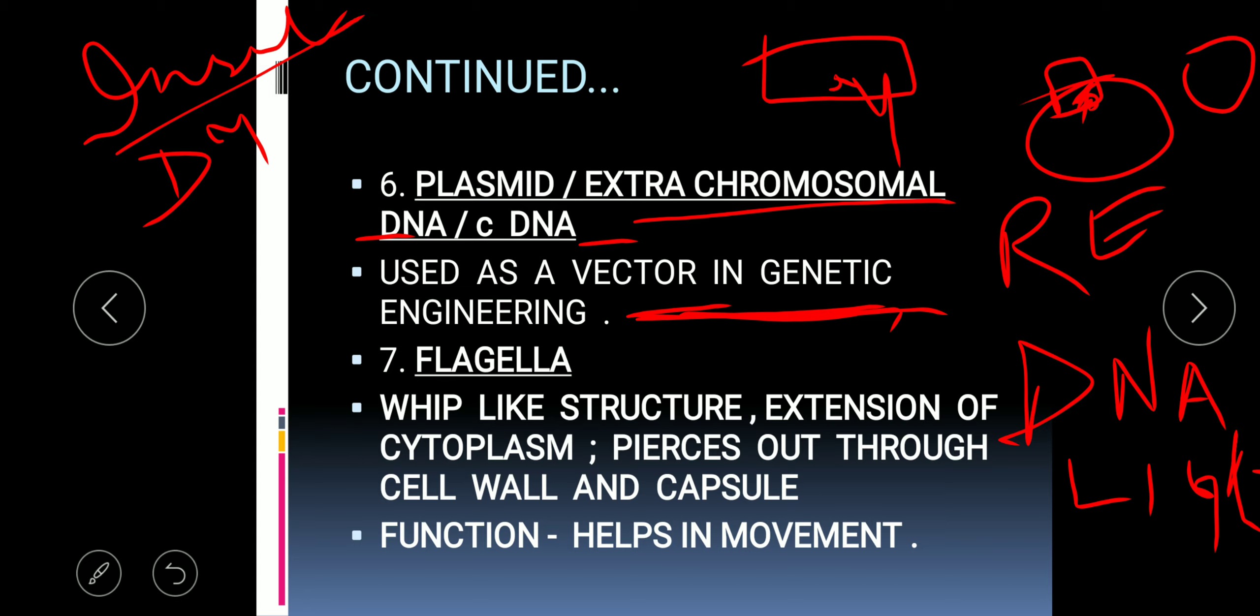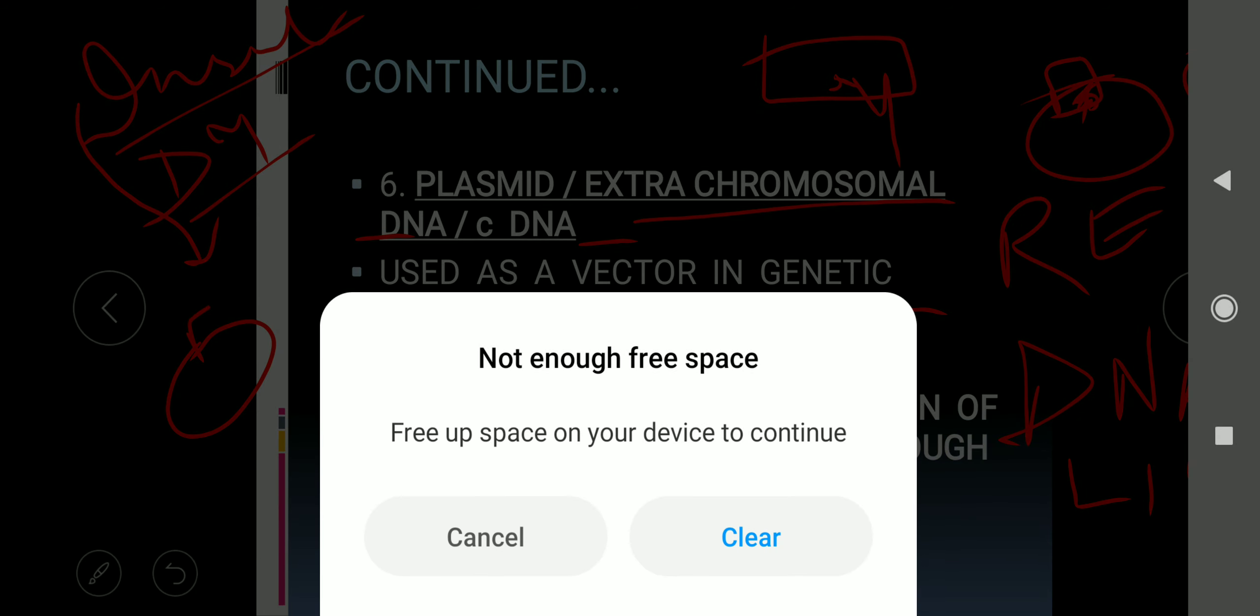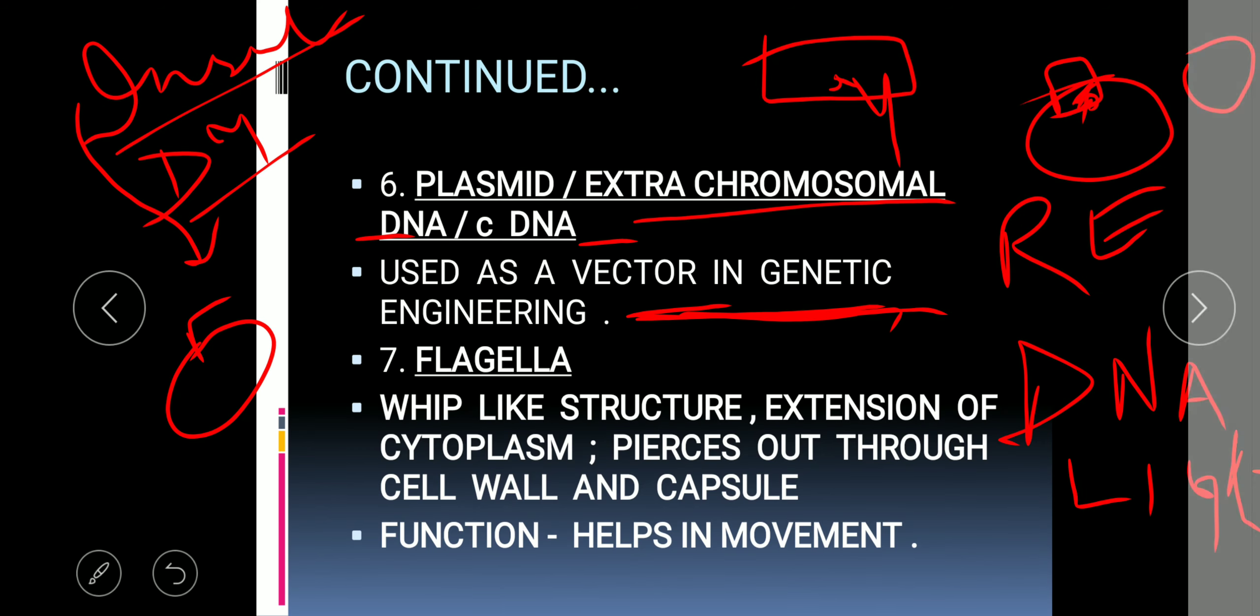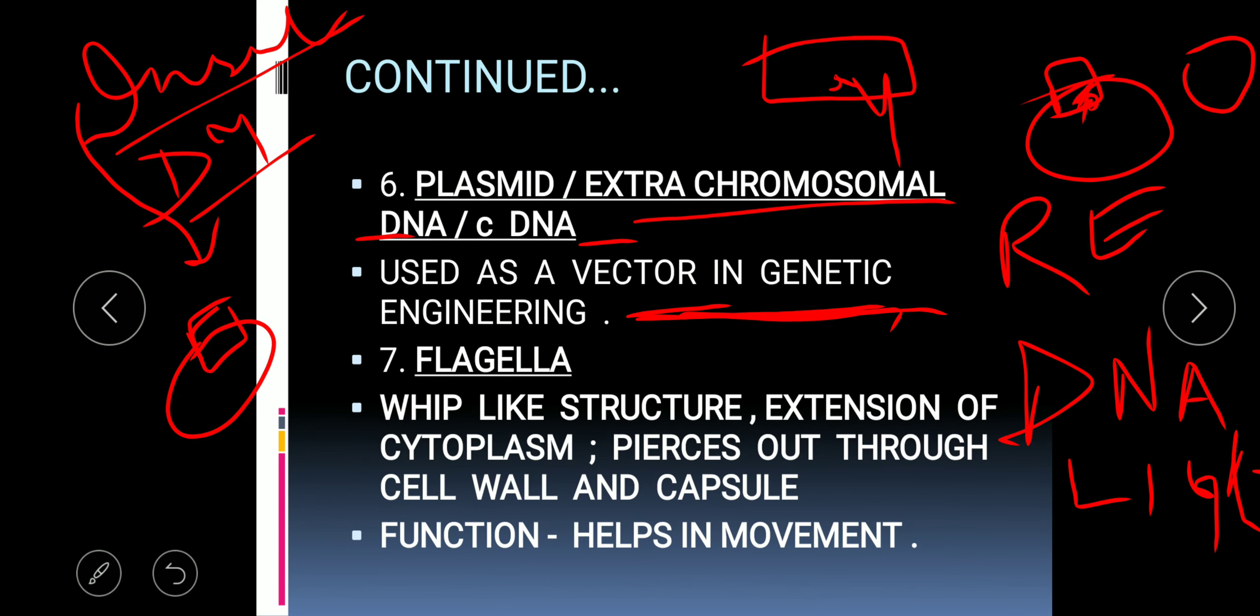If a human doesn't have diabetes, genes from that individual are taken and a bacterial cell is chosen. In that bacterial cell, with the help of restriction endonuclease, part of the plasmid is removed and the gene responsible for insulin synthesis is added with the help of DNA ligase.